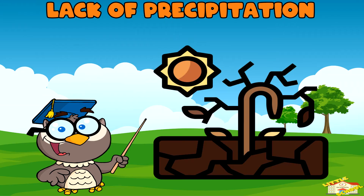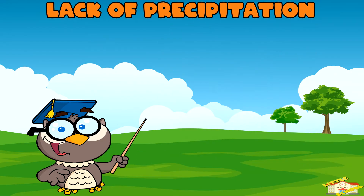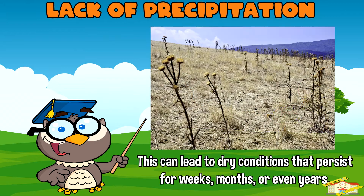Lack of precipitation. Droughts occur when there is a long period of significantly reduced rainfall compared to the average for a particular region. This can lead to dry conditions that persist for weeks, months, or even years.